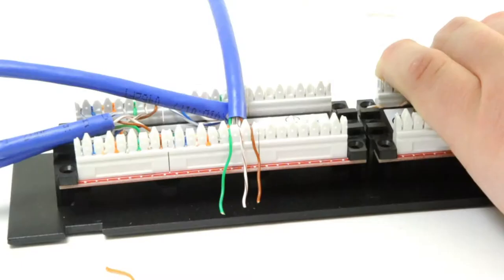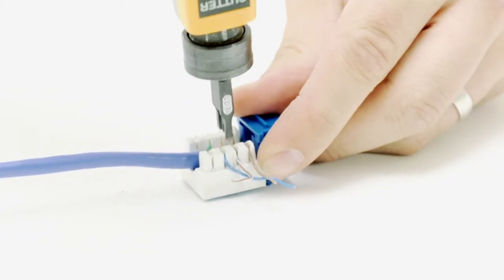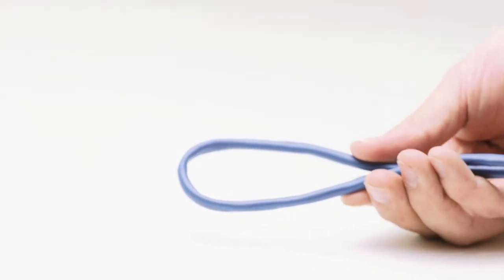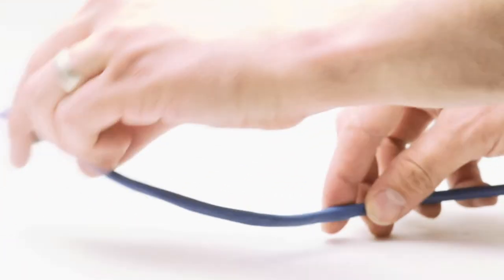Unlike stranded cable, solid CAT6 can be punched down to jacks or patch panels. It is not recommended to be used as a patch cable. Plenum solid CAT6 features a flexible fire retardant PVC plenum rated jacket.